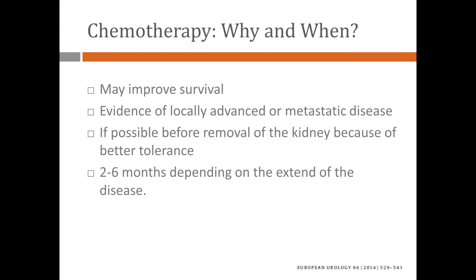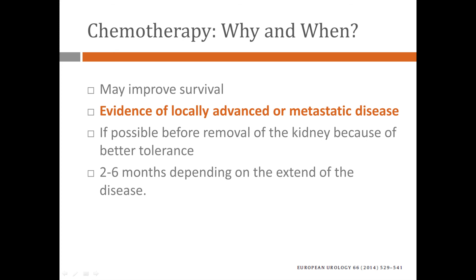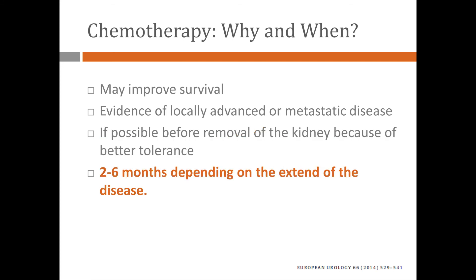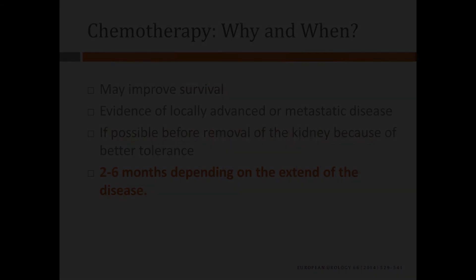Why chemotherapy? It may improve survival. If there is locally advanced disease, sometimes giving chemotherapy before removing the kidney can shrink the tumor and improve the chance of resection. Depending on the stage of the disease and if there is metastatic distant spread, the chemotherapy can go between two to six months.